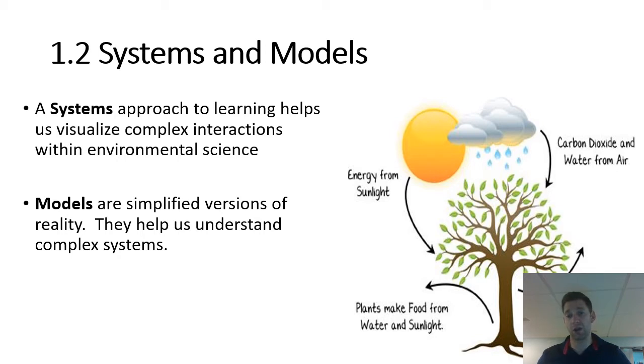Like this drawing on the right of this slide is a model. It's a model that oversimplifies how the tree interacts with the sun and with water and carbon dioxide. It shows where things are coming from and where things are going. So you may think of it as just a drawing, but that's actually a model and it simplifies this really complex entity.